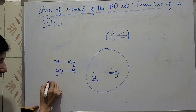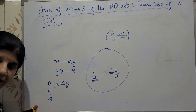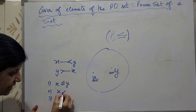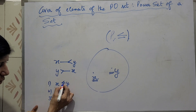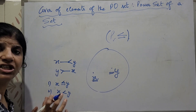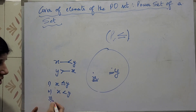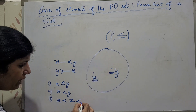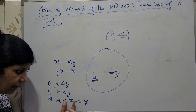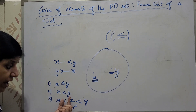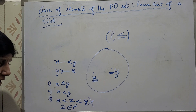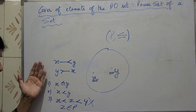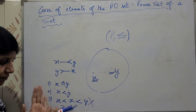Y is a cover of X if the following conditions hold. Number one, X should be strictly related to Y, meaning X and Y must be distinct elements of the PO set P. The third condition that must be satisfied is that there should be no element Z lying between X and Y — no element Z belonging to PO set P which lies between X and Y and is different from both X and Y.